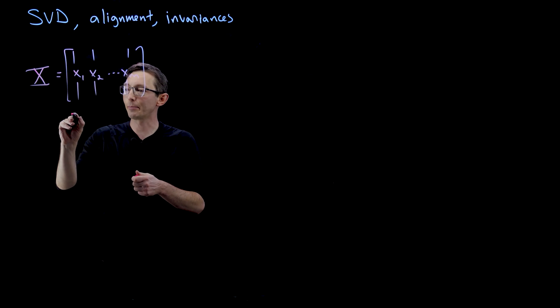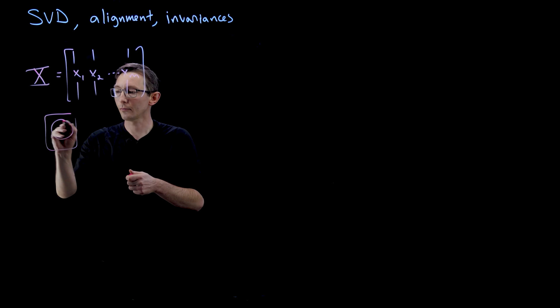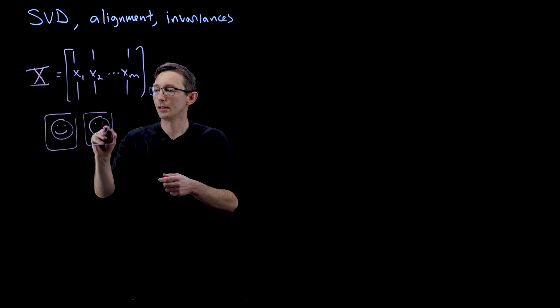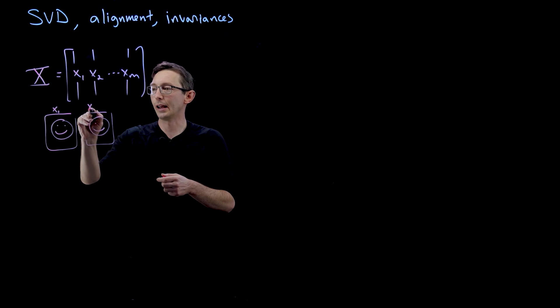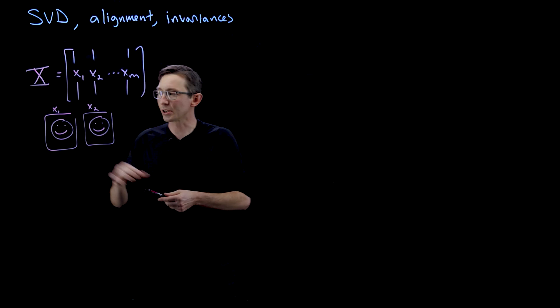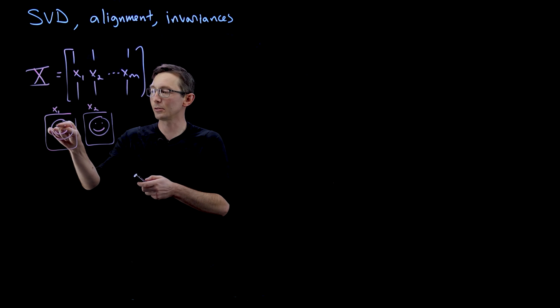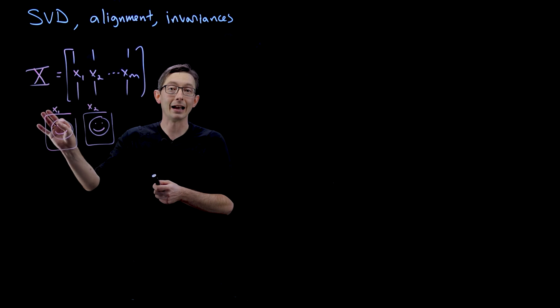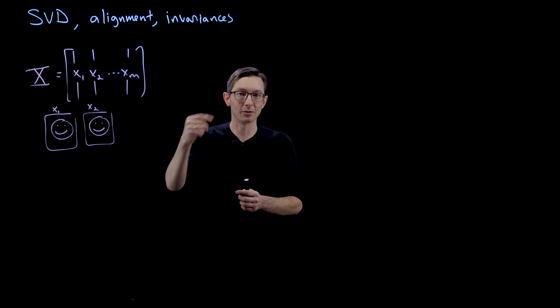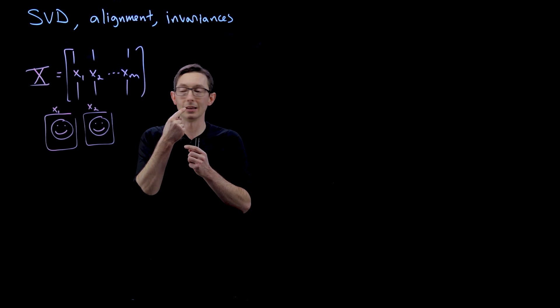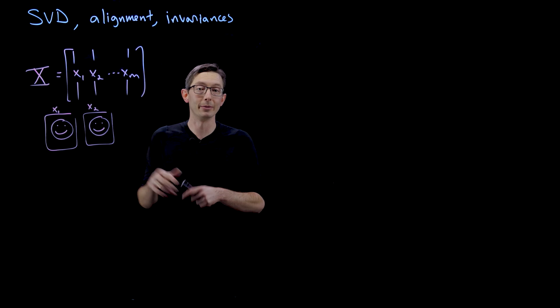So when I take person 1 and I take person 2, let's say this is x1 and x2, and I take their dot product, there is an assumption that when I dot product the pixel corresponding to the eyes that it means an eye in both images. That that pixel is at the location of the eye in both images and the mouth is at the same location in both images.